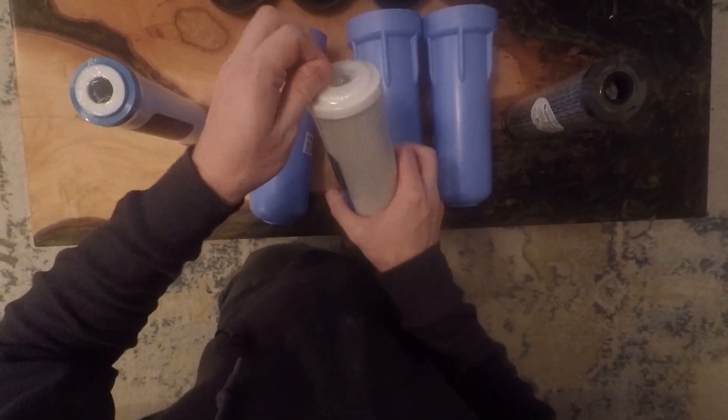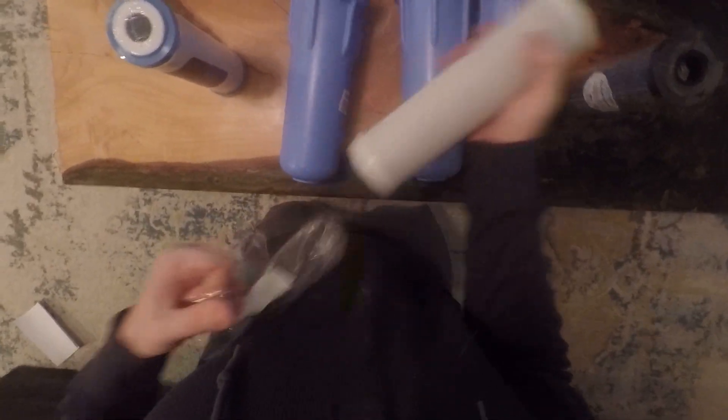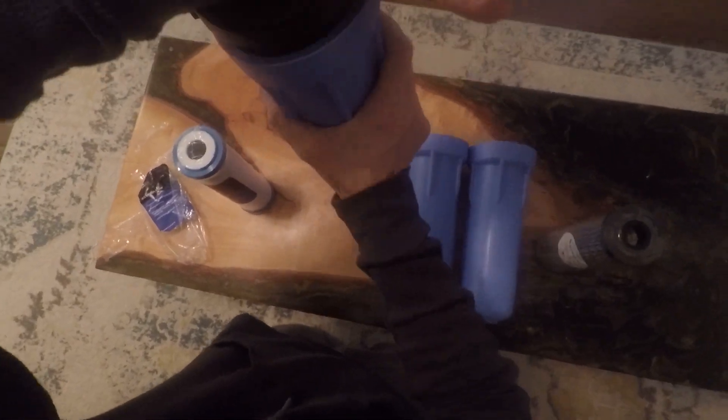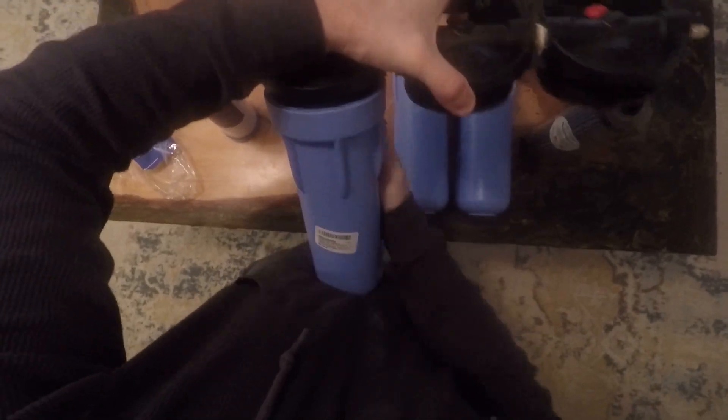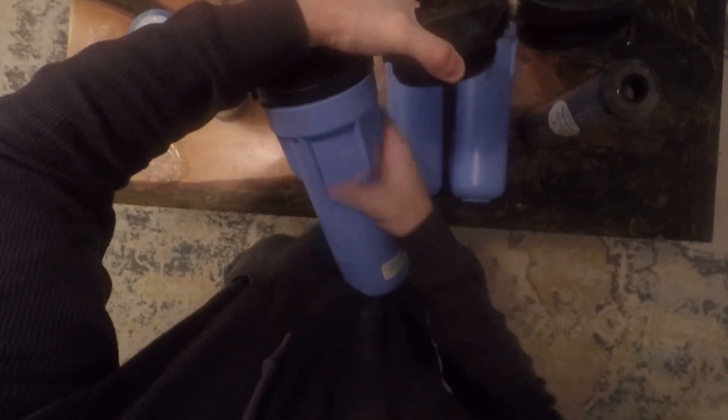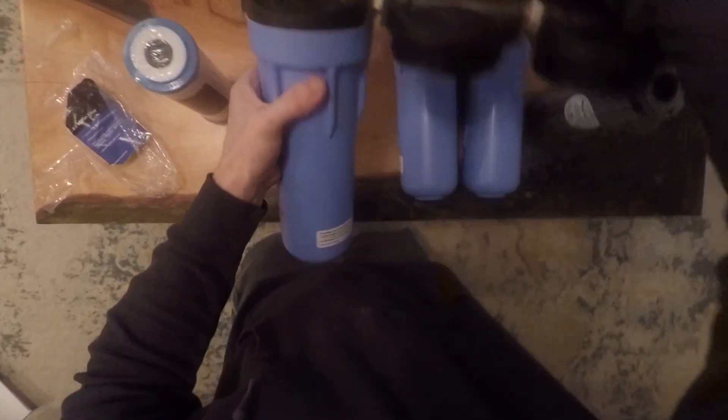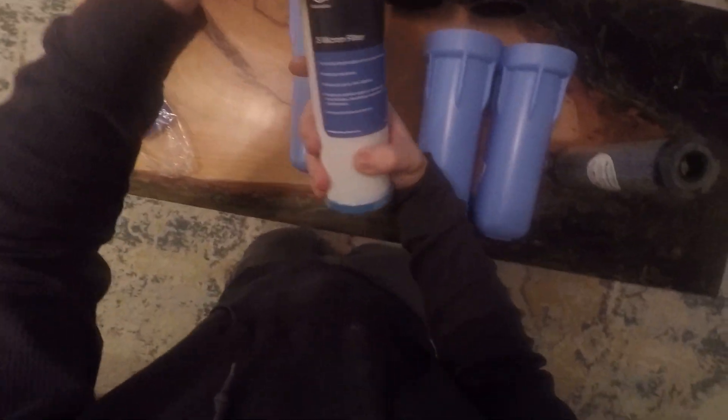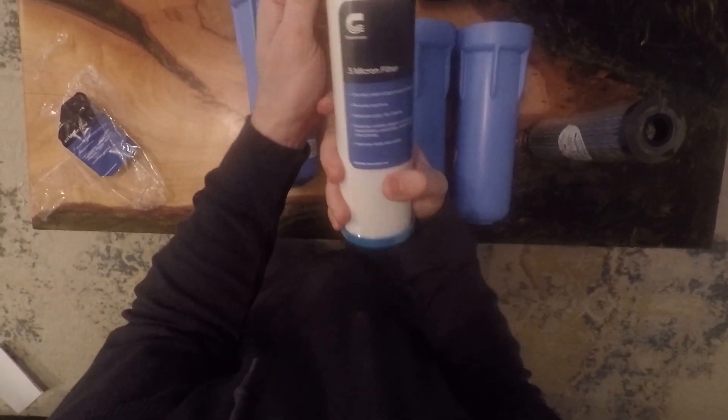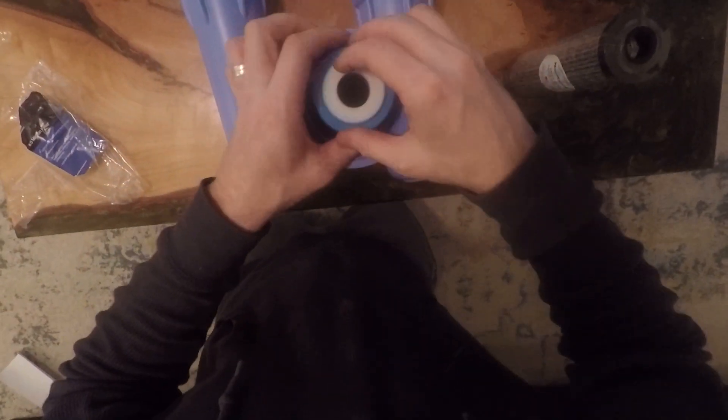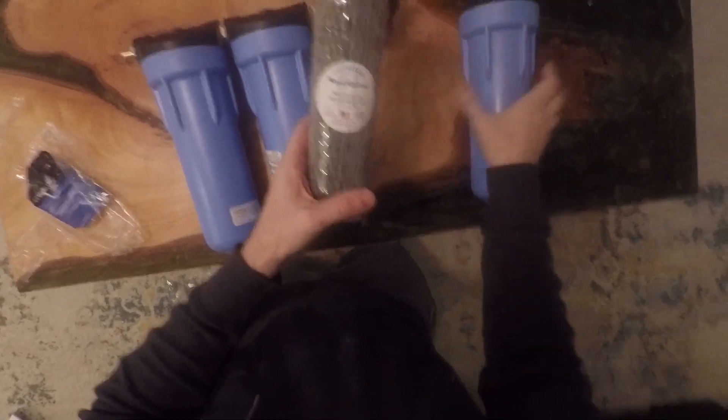So I'm going to put in the 5 microns first. I have to buy the little wrench as well. I'll put a link in the description. And now I'm going to put the 0.5 micron filter from ClearSource. There's an O-ring here so it can fall out. Make sure it doesn't fall out for you.